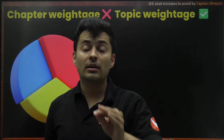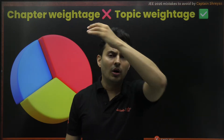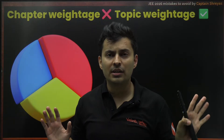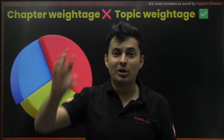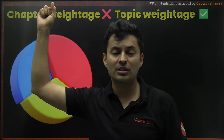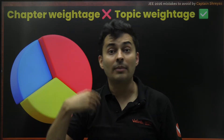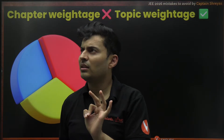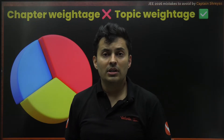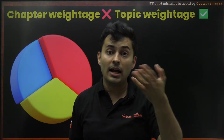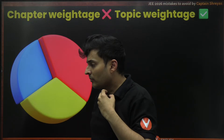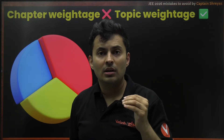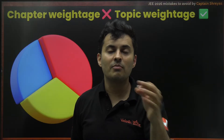There are hundreds, maybe thousands of videos on YouTube and Instagram, and even if you do a normal Google search, there's always a priority list, higher weightage — everything will be given to chapters to skip. This is the biggest mistake kids do. Let me give you an example: take the chapter of Ray Optics. It's a very important chapter, high priority, high weightage. But if you actually think about it, not all the subtopics are important.